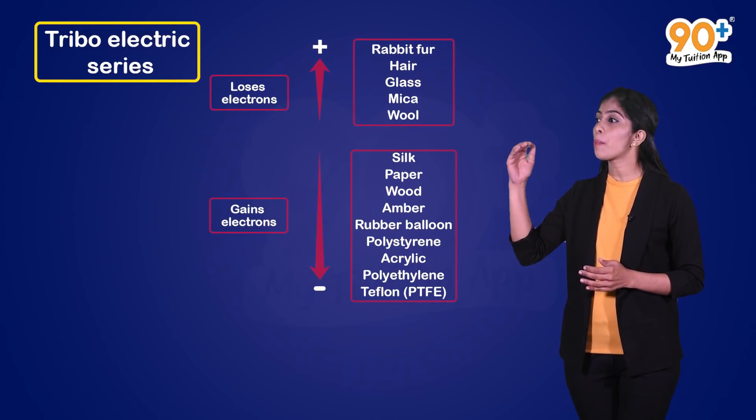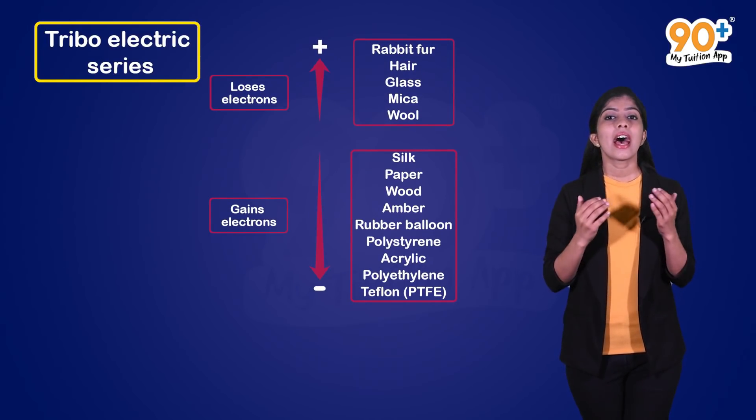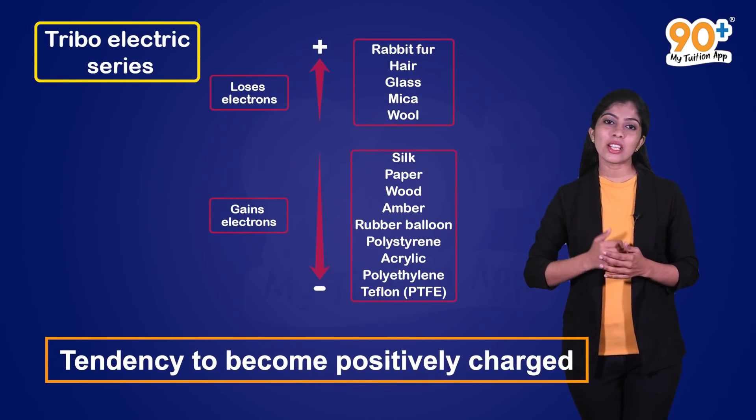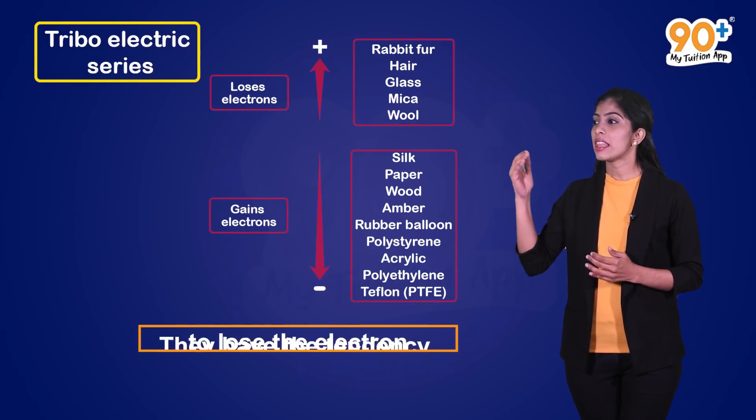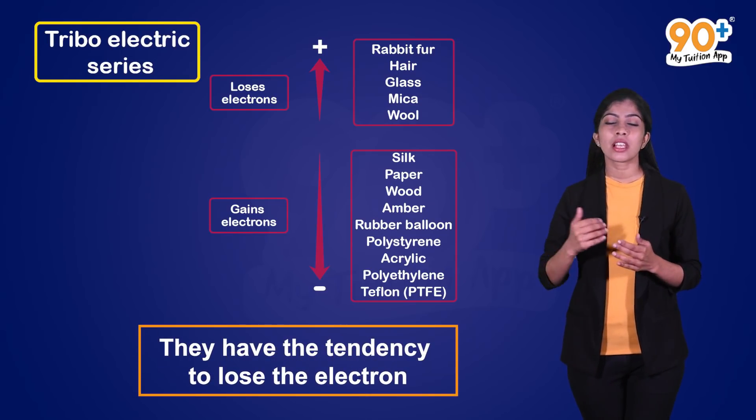The objects in the upper side of this series have a tendency to become positively charged. That is, they have the tendency to lose electrons.